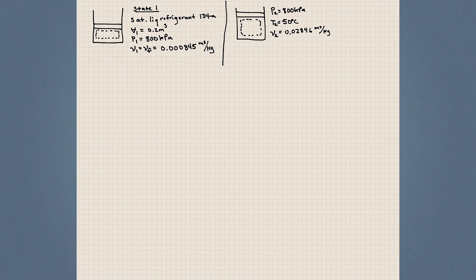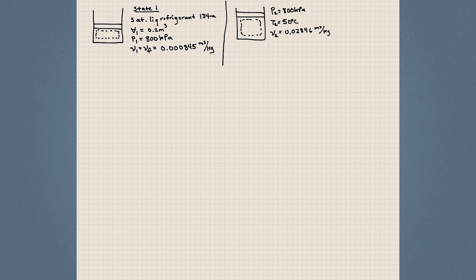In this first problem, we have a piston — a closed system — and initially it has a volume of 0.2 meters cubed. Inside this closed system is a saturated liquid refrigerant 134A, basically a fluid, and we know the state that fluid is in. We also know the volume and the pressure. Knowing the phase and the pressure, we can look up the specific volume in the tables, which is 0.000845 meters cubed per kilogram.